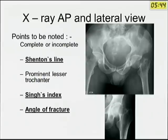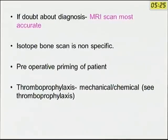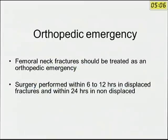After clinical examination, X-rays in AP and lateral views are obtained. Points to be noted include whether the fracture is complete, whether Shenton's line is broken, prominent lesser trochanter due to external rotation, Singh's index, angle of fracture, and acetabular changes. If doubt exists about the fracture, MRI is the most accurate investigation of choice rather than CT, as it shows edema and micro-fracture lines. Isotope bone scan is non-specific. Pre-operative priming and thromboprophylaxis are important.